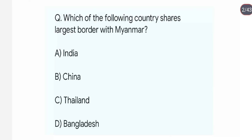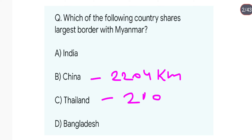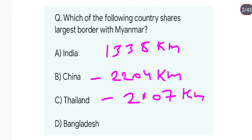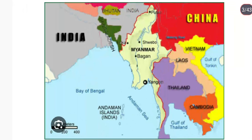Which of the following countries shares the largest boundary with Myanmar? Myanmar के साथ largest boundary कौन share करता है? China share करता है 2,044 किलोमीटर, Thailand share करता है 2,107 किलोमीटर, और India share करता है 1,138 किलोमीटर। तो सबसे ज़्यादा boundary share करता है China। Myanmar की border लगती है Bangladesh, India, China, Laos, और Thailand से।